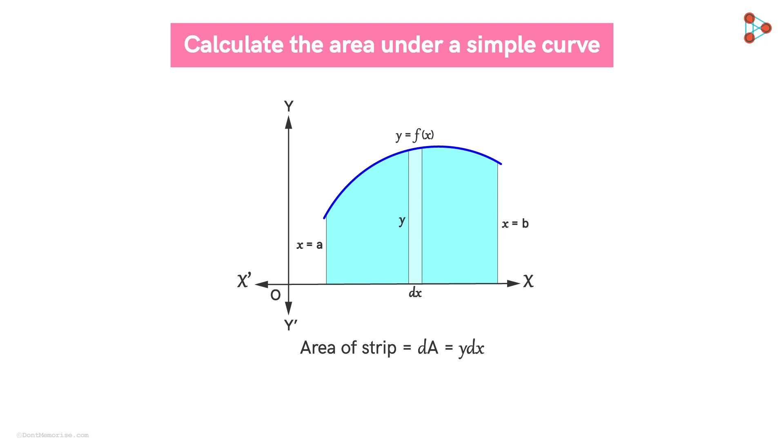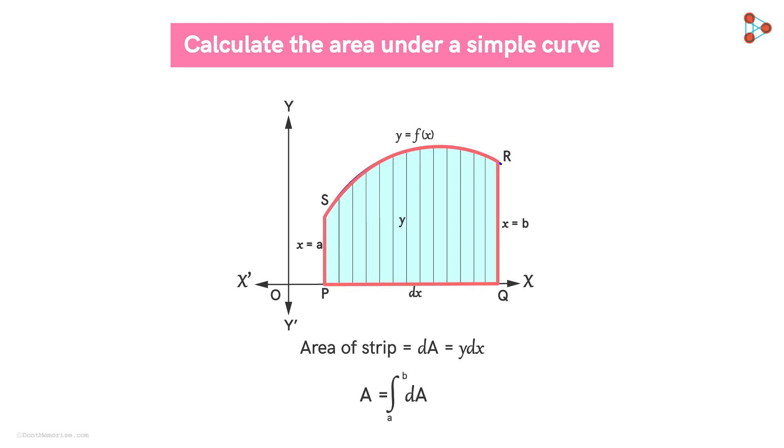Now we can divide the area under this curve into a large number of such thin strips. Each of these areas will be called elementary area. Now we can say that the total area of the region PQRSP is the addition of all these elementary areas of thin strips across the region. We can express this area as integration of DA from A to B. On substituting DA and Y, we get the integration as shown.